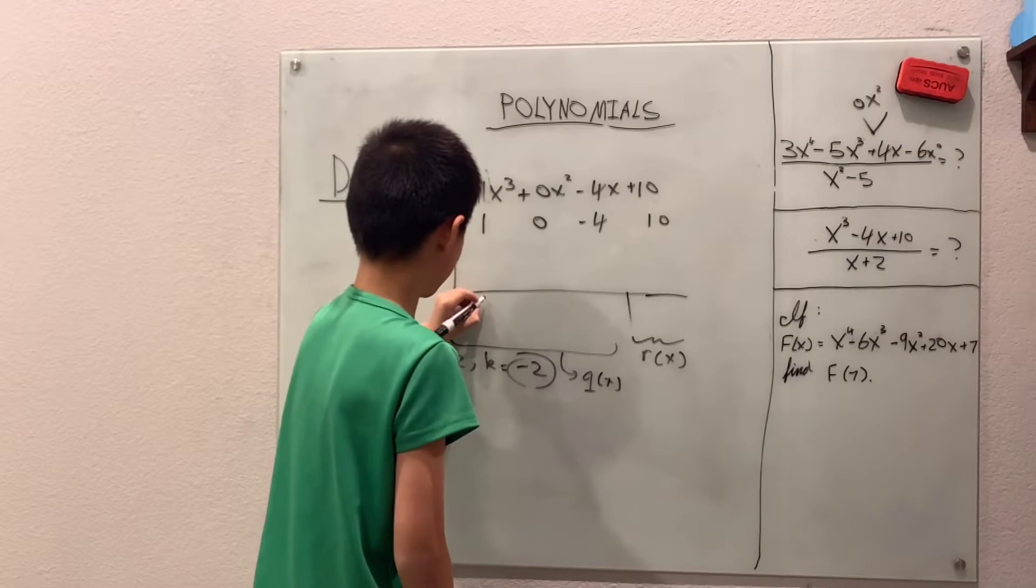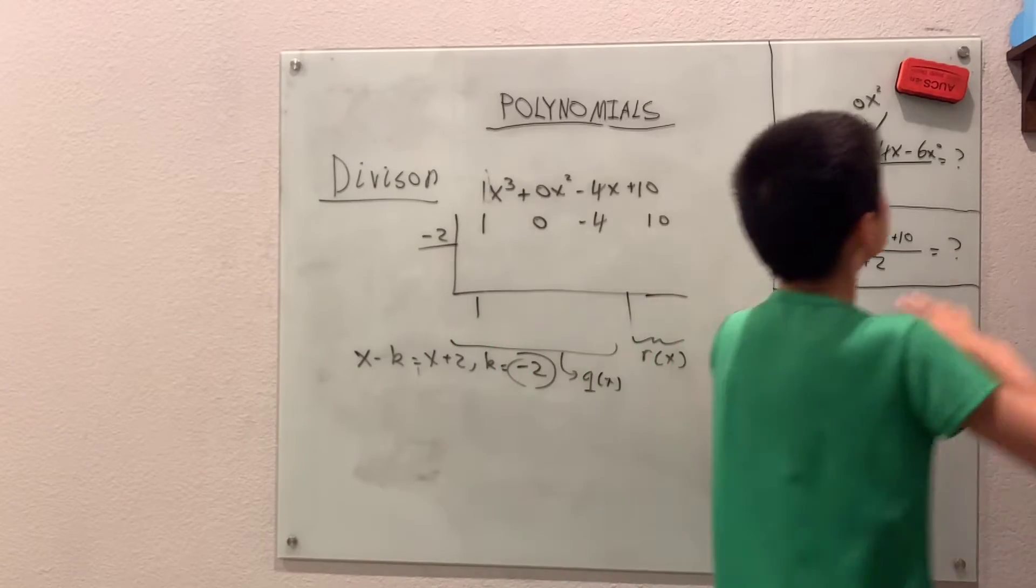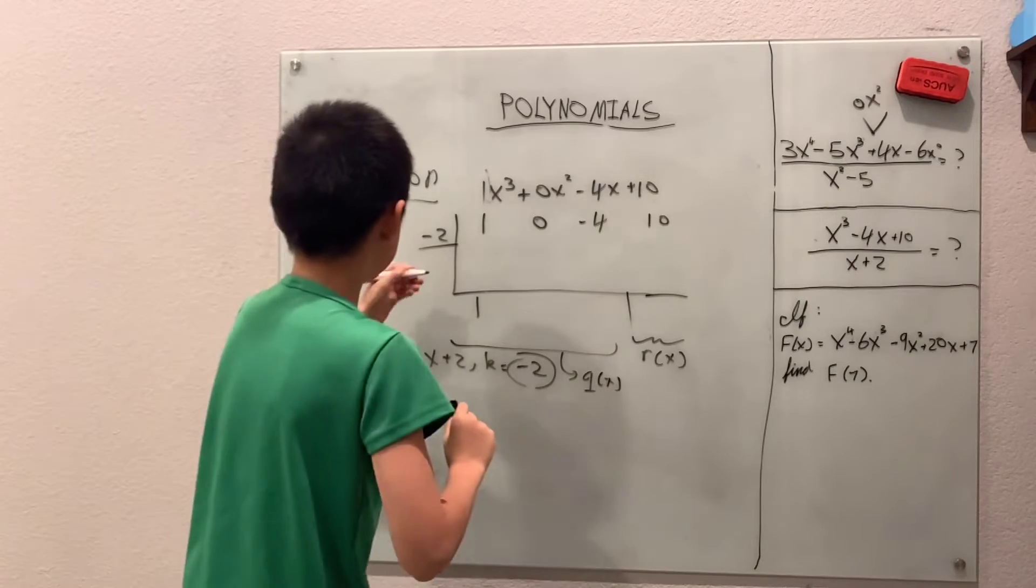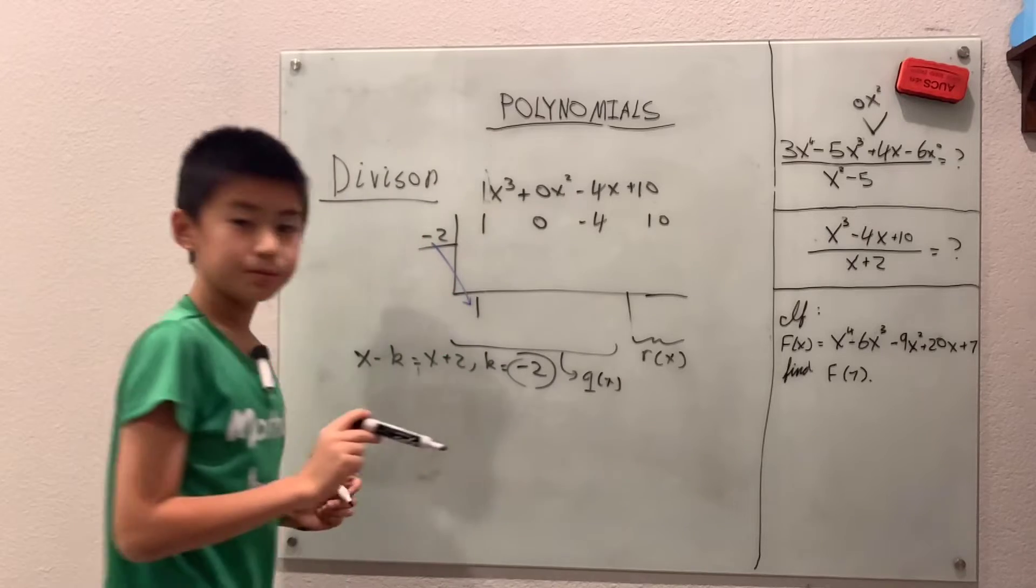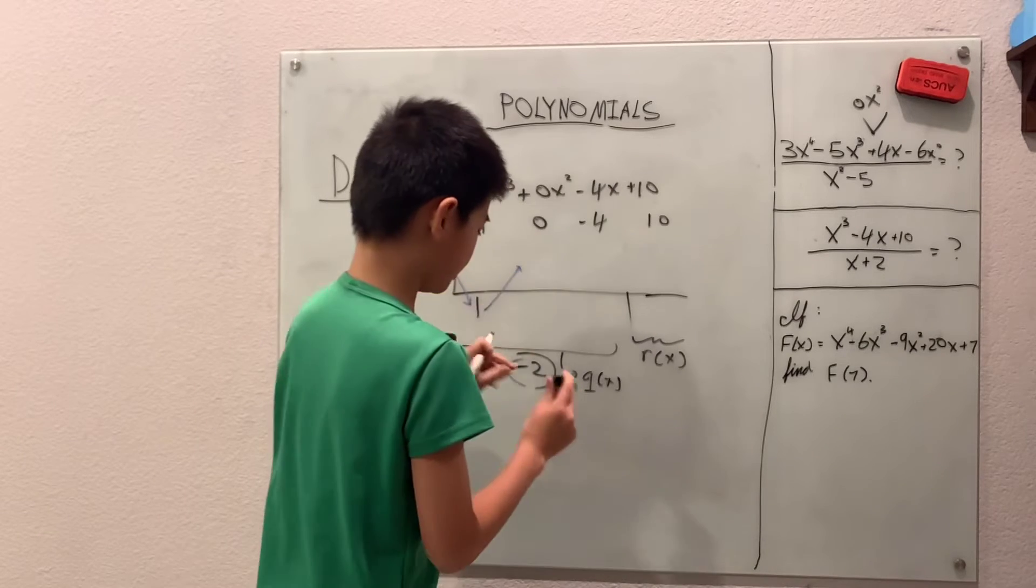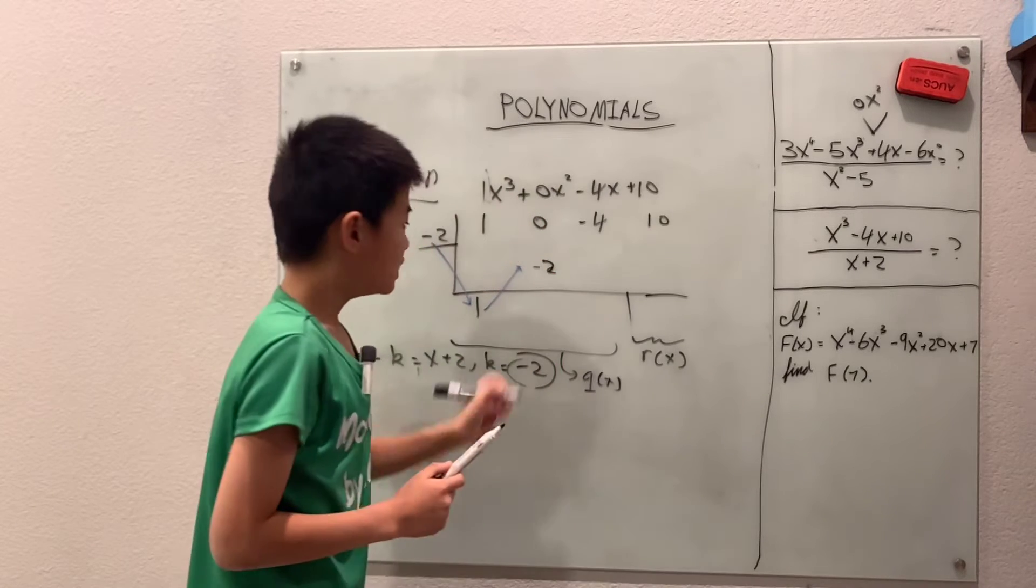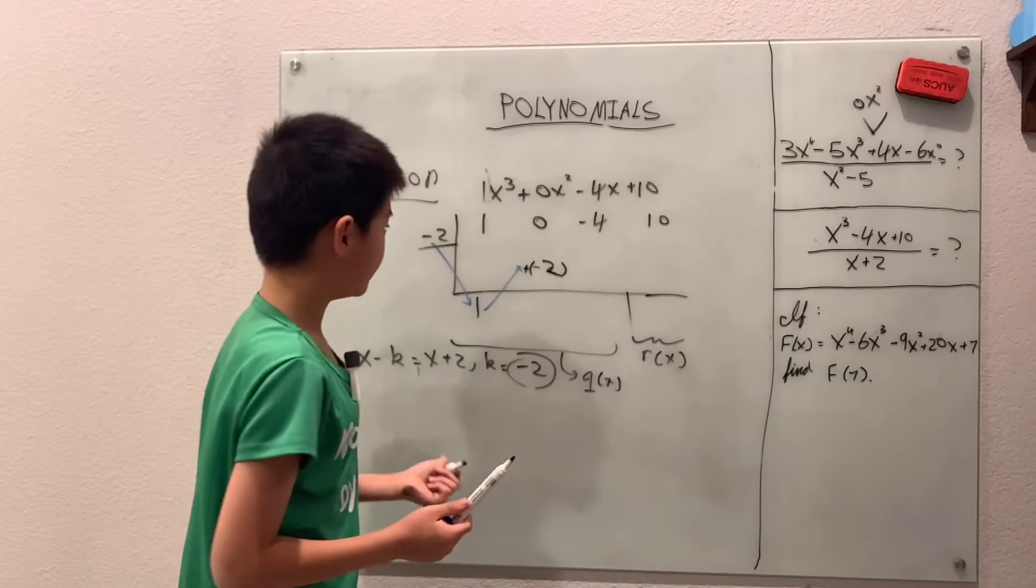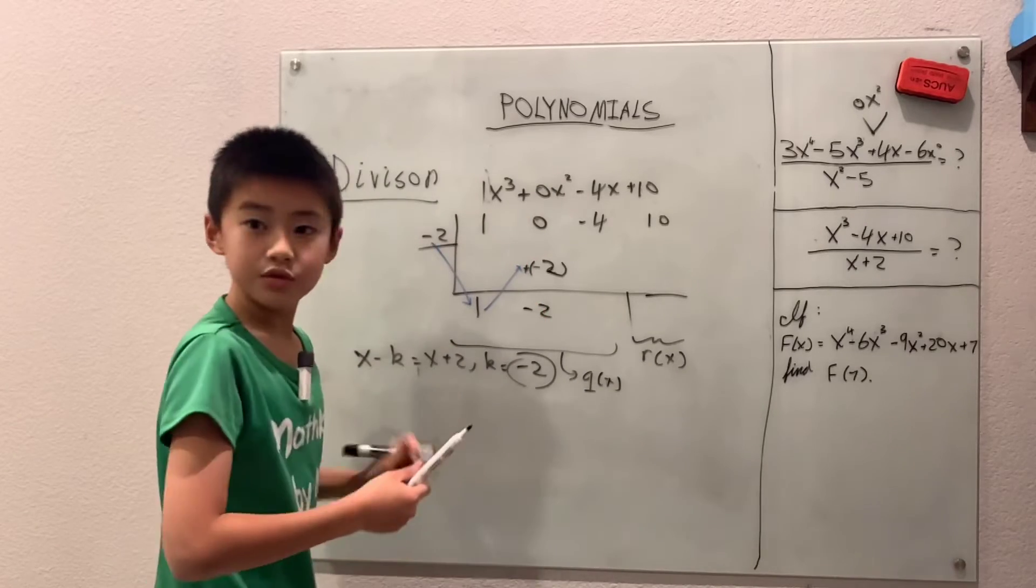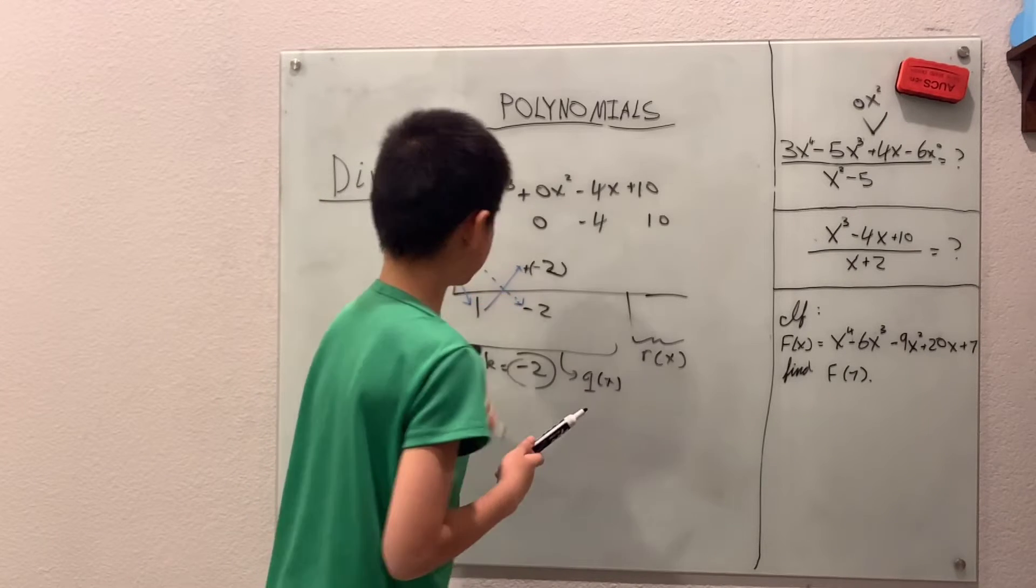So this first one comes down and then we drop it here. Let's get this uncapped. I will use this pen so that we more clearly see. So negative two is multiplied by one, so then we get the result which is negative two, right? And then we add these two together, we add to get negative two.